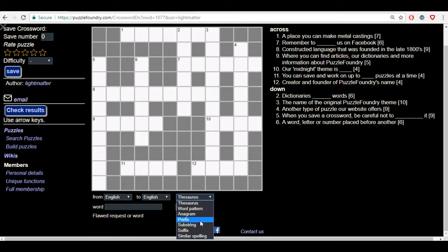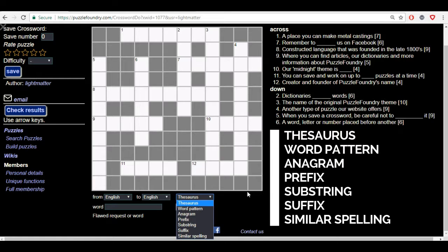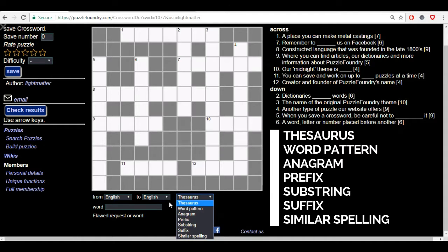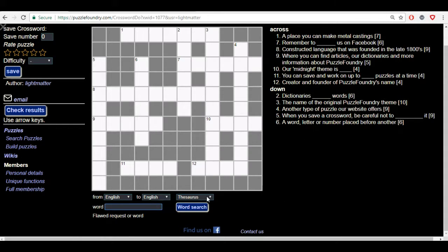Then here are all the unique functions that we have: the thesaurus, word pattern, anagram, prefix, substring, suffix and similar spelling. These are the things you'll be using that could help you when you're solving the puzzles.